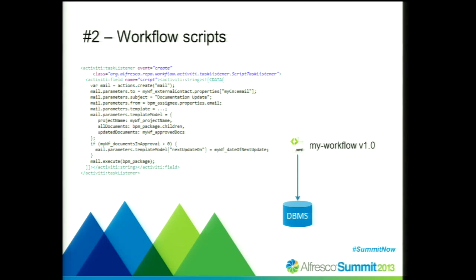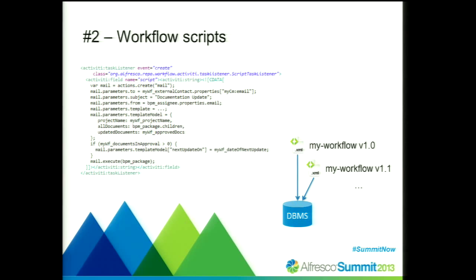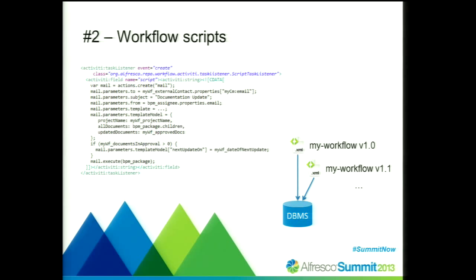If we deploy this workflow script to Alfresco, it's contained in the XML description of the workflow process definition and saved to the database — to the Activiti data tables in our database management system. If we have an evolution of this workflow, we have several versions of the workflow definition in the Alfresco database, and this is the source from which the script code is retrieved for every execution. It doesn't matter what you have on the class path — it always reads the JavaScript code from these persisted workflow definitions.